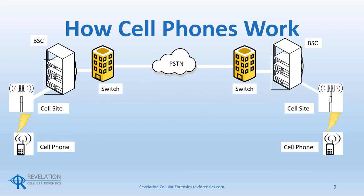As an example, if a cell phone on the AT&T network called a cell phone on the Verizon network, the AT&T cell phone connects to an AT&T cell site. The call routes through the BSC to the AT&T switch, also called the LAC or the local area cell. The computers at the AT&T LAC would search the receiving phone number to see if it is on the AT&T network. When the network determined the second phone was not on the AT&T network, the call then routes to the PSTN, which would determine the receiving phone number was on the Verizon network. The call routes to the Verizon switch, then the Verizon BSC, and then the closest tower to the phone, where the call to the phone completes.